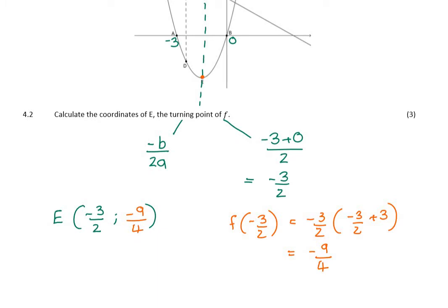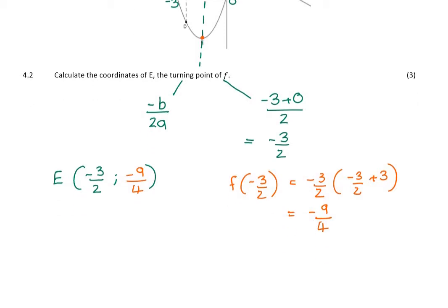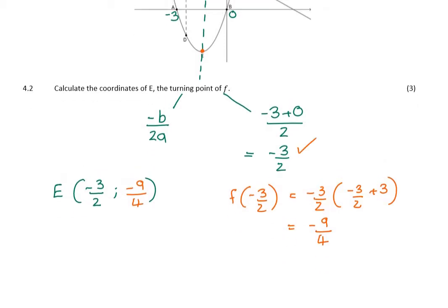You know, that's a negative value, so that looks plausible. Okay, so that was the turning point. Three marks, because you had to find the turning point. You had to substitute in, and then find y.